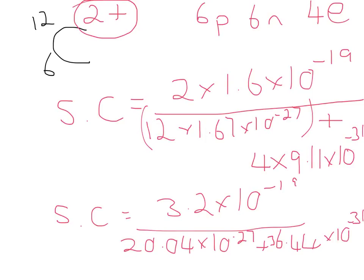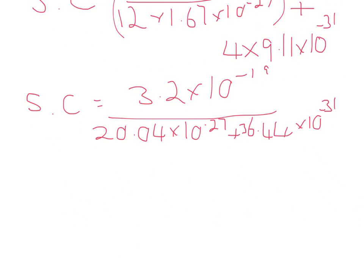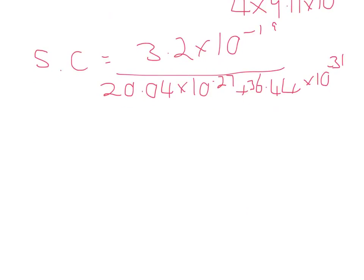Now when we work that out, and again I do this in stages, the specific charge is 3.2 times 10 to the minus 19. Divided by 20.04 times 10 to the minus 27 plus 36.44 times 10 to the minus 31. Now is the stage where we attempt to type this into my calculator carefully. And when you do that, you work out that the answer, specific charge, eventually works out to be 1.6 times 10 to the 7 coulombs per kilogram.